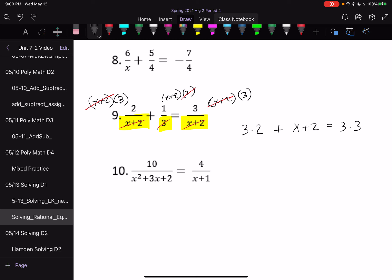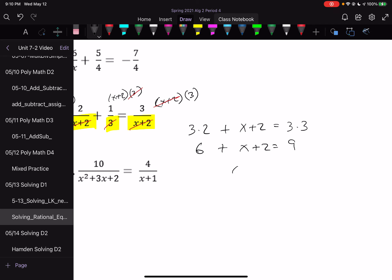So, rewriting this, I have 6 plus x plus 2 equals 9. So, I have x plus 8 equals 9, subtracting 8 gives me x equals 1.